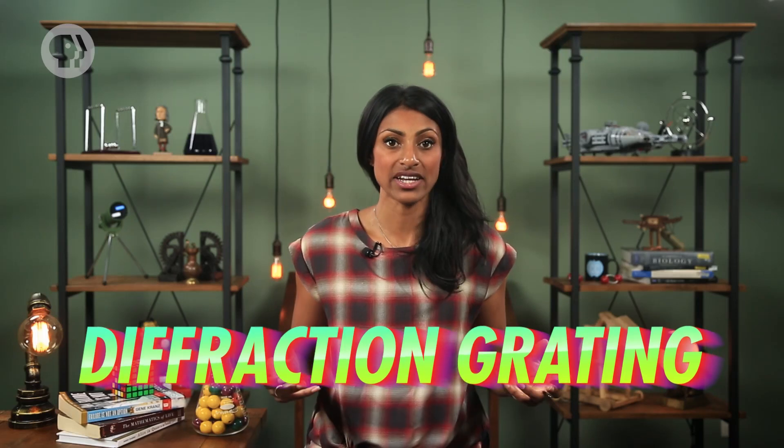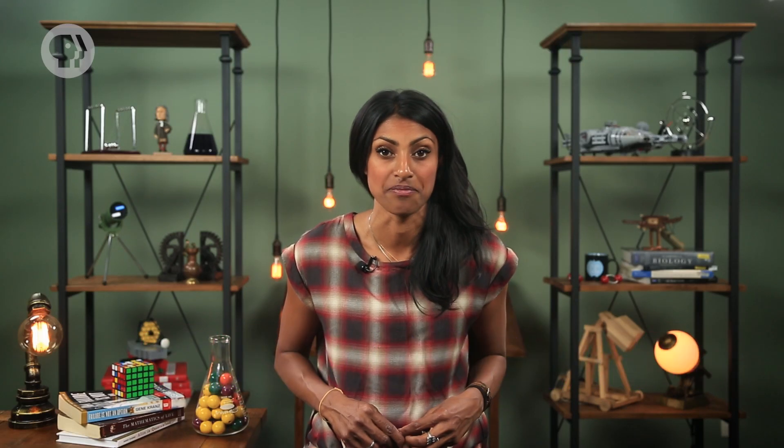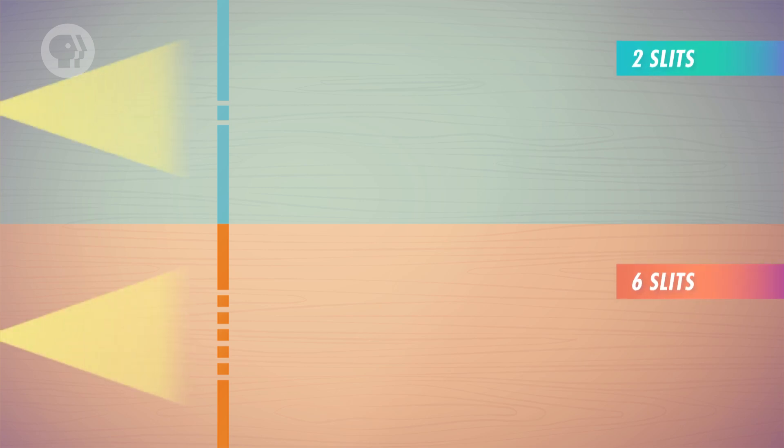When you shine a light through one of these gratings, the diffraction lines are much more intense and easier to measure. Plus, when there are more slits, there's also more opportunity for destructive interference, so the dark spots between bright lines are larger as well.